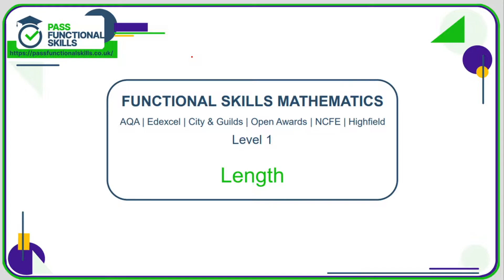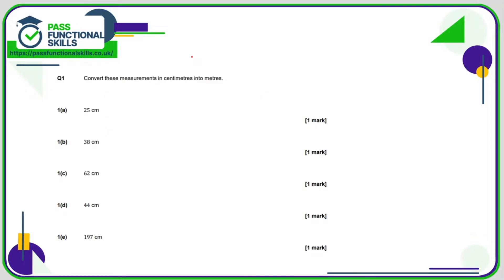Let's take a look at these length questions, which are a mixture of calculator and non-calculator. I will let you know which questions you can use a calculator for. The first question involves converting centimetres into metres. Now, one metre equals 100 centimetres. So when converting metres into centimetres we multiply by 100, and converting centimetres into metres we divide by 100.